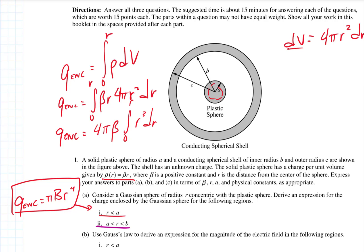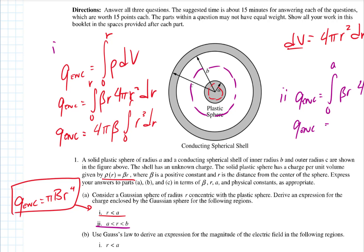For part two, that's the region in between the shells. Our Gaussian surface goes in between, enclosing only the entire plastic sphere. It's the same integral, but the limits go from zero to A, because that's where the charge distribution stops — it stops at the radius of the inner sphere. Since the only thing changing is the limits, q enclosed is πβA⁴. Part A was worth three points for part one, and one point for part two since it was just a change to the limits.